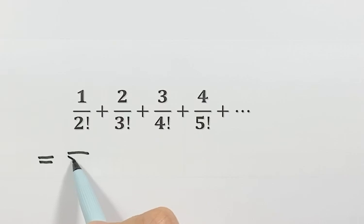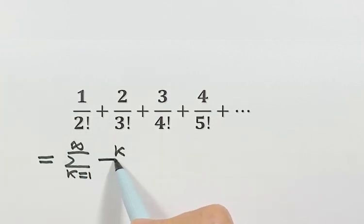So here, just sum k from 1 to infinity. Then the numerator is k. Then the bottom, k plus 1 factorial.